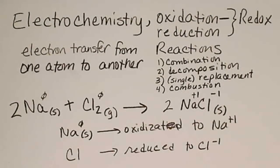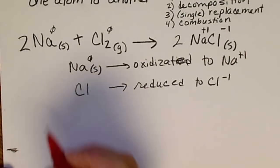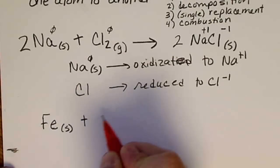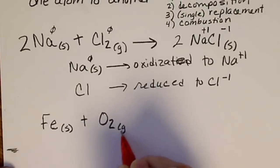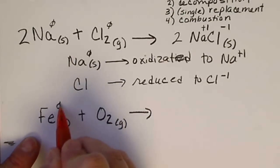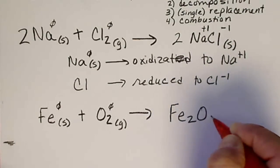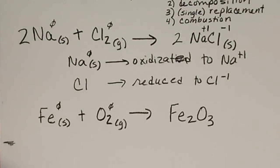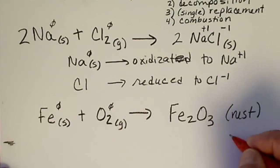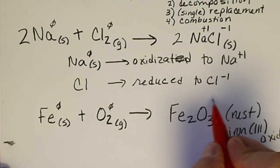Another common combination reaction is the formation of rust. The element iron, which is a nice shiny metal, in the presence of oxygen, will also undergo a combination reaction. Since these elements each have a charge of zero, and the formation is an ionic compound, then electrons definitely have to be transferred for the charges to change. This is commonly known as rust, or iron three oxide, would be the systematic name.